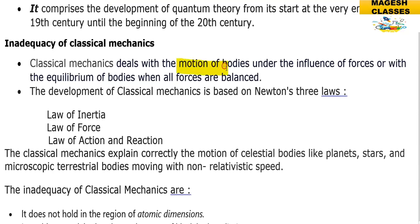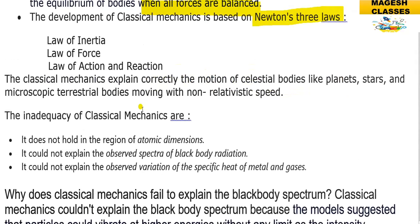Classical mechanics deals with the motion of macroscopic bodies under the influence of forces, or with the equilibrium of bodies when all forces are balanced. Classical mechanics is based on Newton's three laws: the law of inertia, law of force, and law of action and reaction. It correctly explains the motion of celestial bodies like planets and stars, as well as terrestrial bodies moving at non-relativistic speeds.